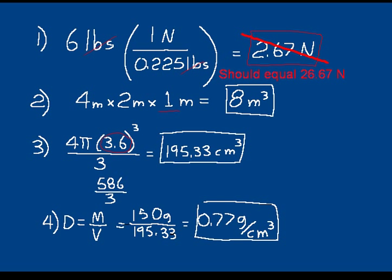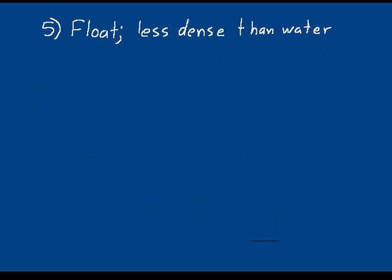That's a density less than water, so a baseball should float. If our calculations are right, we can understand that a baseball floats because its density is less than that of water. You can go try it — put a baseball in water and see if our calculations match what actually happens. The answer for question 5 is that the baseball should float because it's less dense than water.